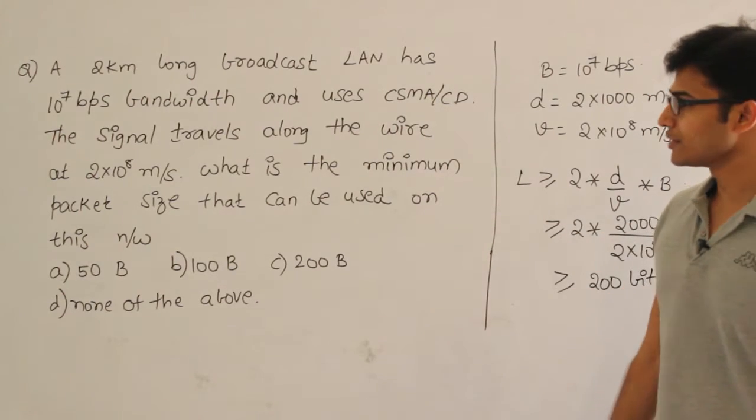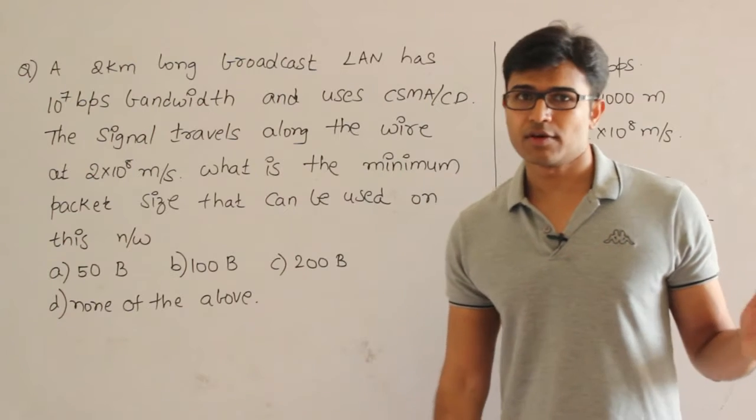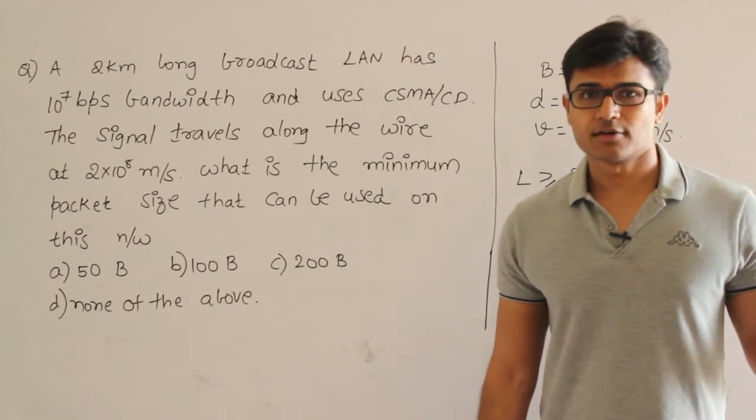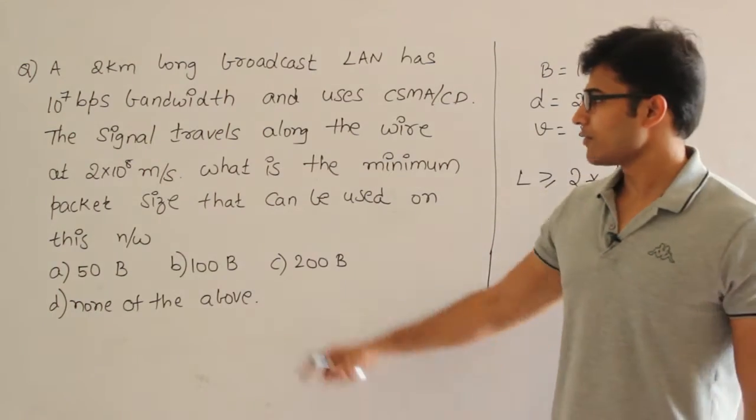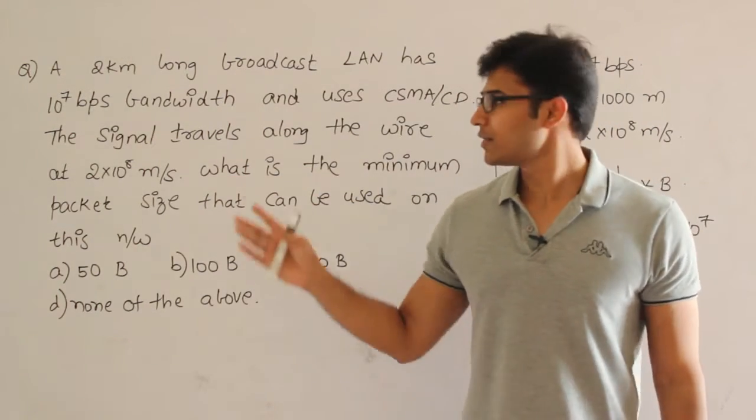It uses CSMA/CD, so they are talking about a CSMA/CD network. The velocity is 2×10^8, which is 70% of the speed of light in vacuum. So 70% of the speed of the signal in vacuum is 2.1×10^8, but they are given it as 2.